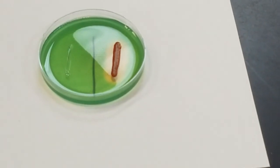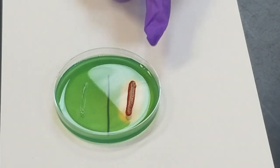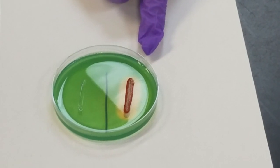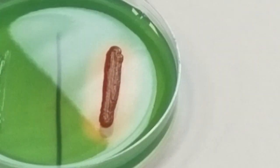To see it better, we can put it on a white piece of paper, and now you can really see the clearing. So this is positive for the breakdown of DNA, of nucleic acid, and this is negative.